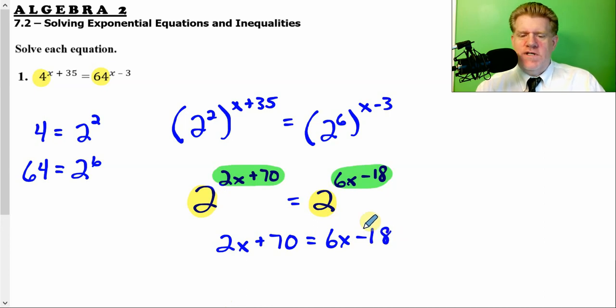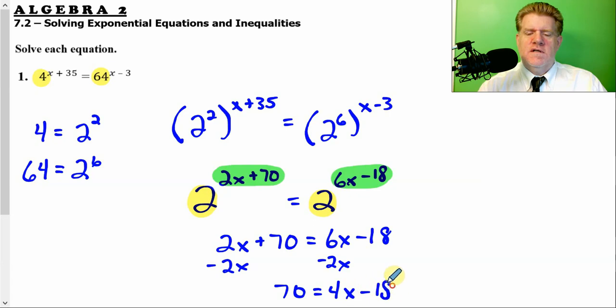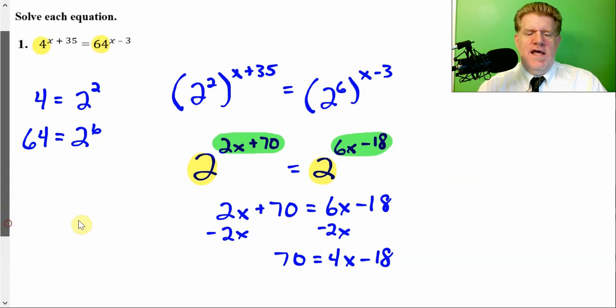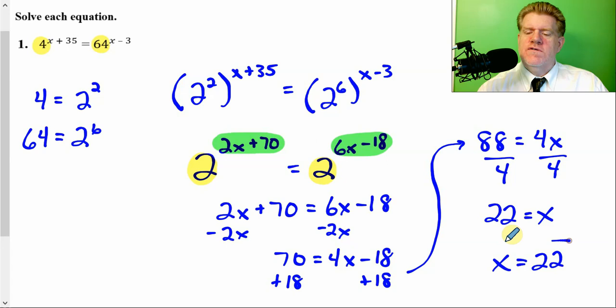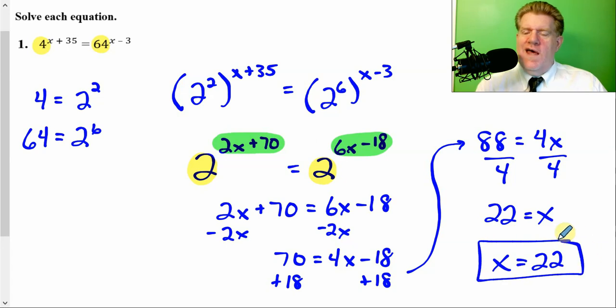So, the next step, nice and simple. If I have bases that are the same, I can set the exponents equal to each other. And now, ladies and gentlemen, it's just a flat-out linear equation. Subtract 2x from both sides. And I'm going to add 18 to both sides. 70 plus 18 is 88 and then 4x. So, divide by 4. We get 22. x equals 22. And that's how you do it.